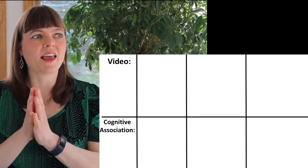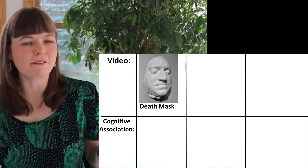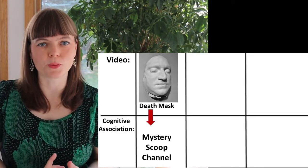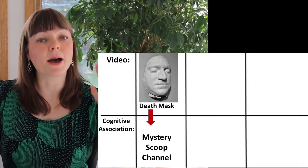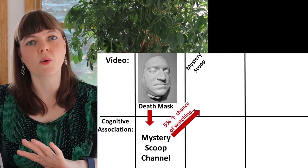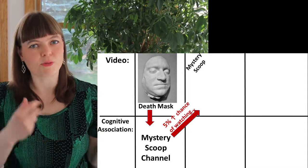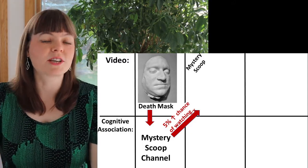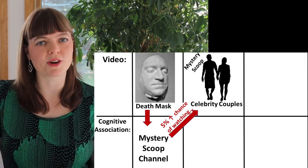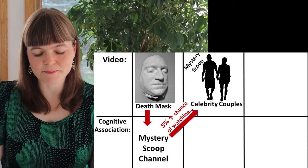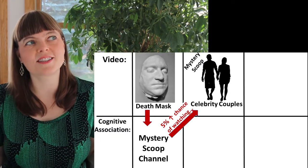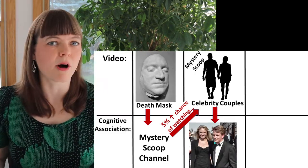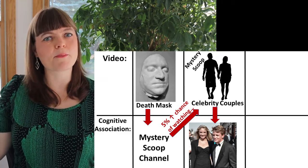Recently, I watched a video on death masks, which showed the death masks of famous people like Benjamin Franklin — it was really cool, from a channel called Mystery Scoop. The next time I went on the platform, it showed me another Mystery Scoop video. Since I'd had a great experience with the death masks video, I clicked on it. It happened to be a celebrity couples video about which celebrity couples have lasted the longest, showing lots of celebrities — including Michael J. Fox and his wife Tracy Pollan.